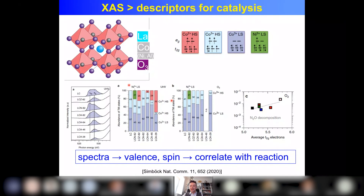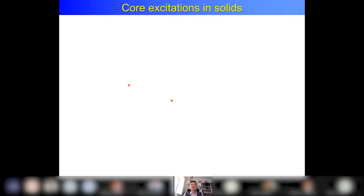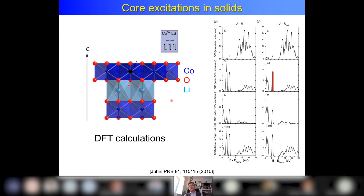After this initial example, I'll go to the phenomena of core excitations in solids — what actually happens when you excite a core electron with a photon. I switch to lithium cobalt oxide. Lithium cobalt oxide is a layered system — you can think of it as rock salt with layers of cobalt oxide and lithium oxide. In this case cobalt is low spin: T2G is full, EG is empty.